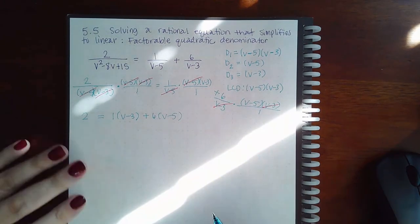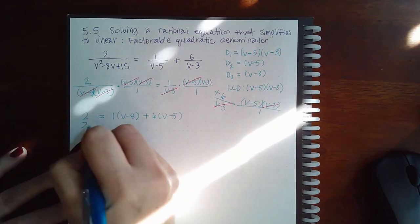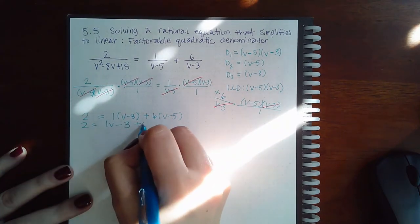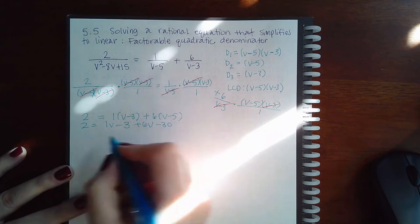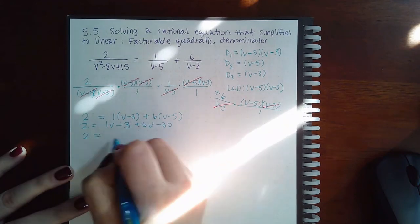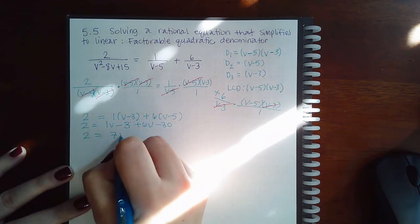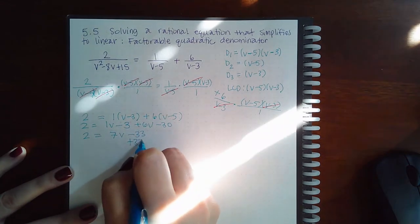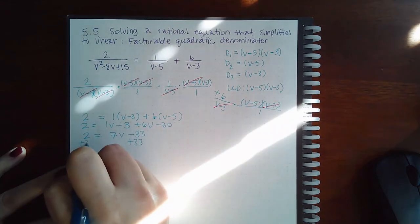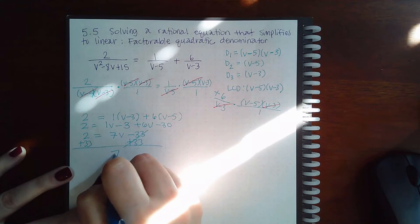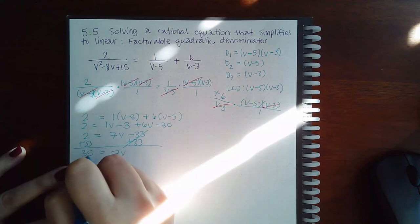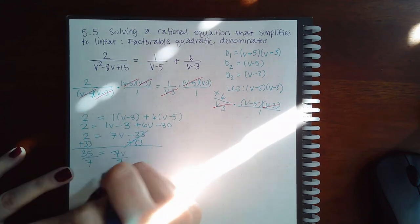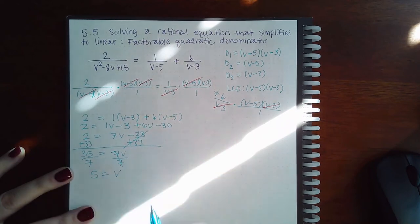Let's go ahead and distribute. We get 1V minus 3 plus 6V minus 30. Combining like terms on the right-hand side gives 7V minus 33. Adding 33 to both sides gives 7V equals 35. Dividing by 7 on both sides, we get that V equals 5.